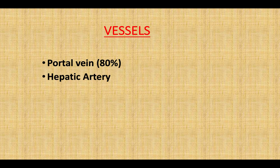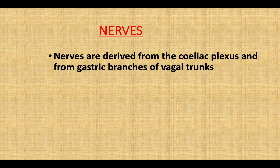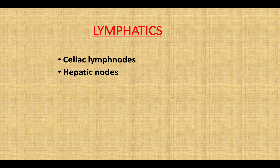Vessels: the liver is supplied by the portal vein and hepatic artery. Nerves are derived from the celiac plexus and also from the gastric branches of the vagal trunks. Lymphatics drain into the celiac lymph nodes and hepatic lymph nodes.